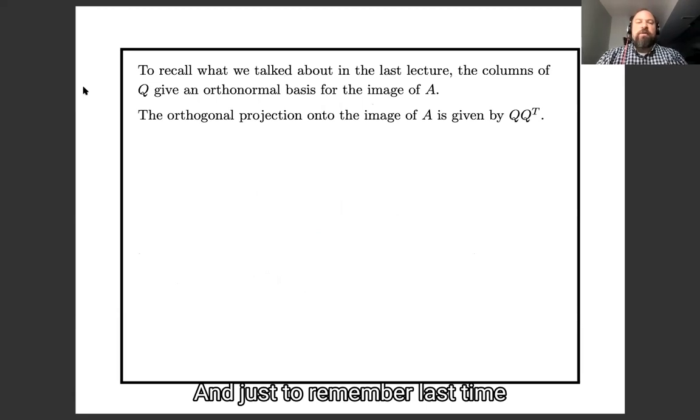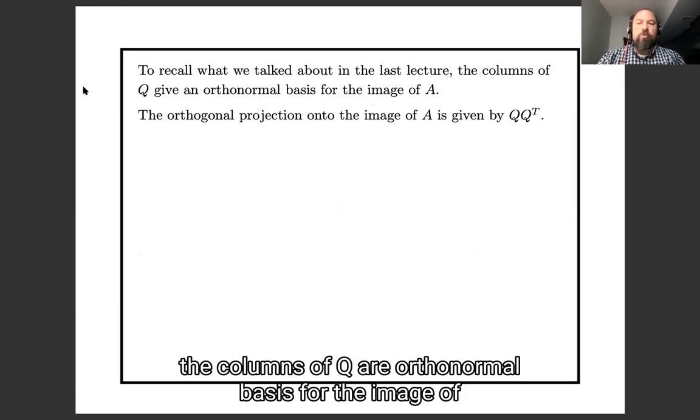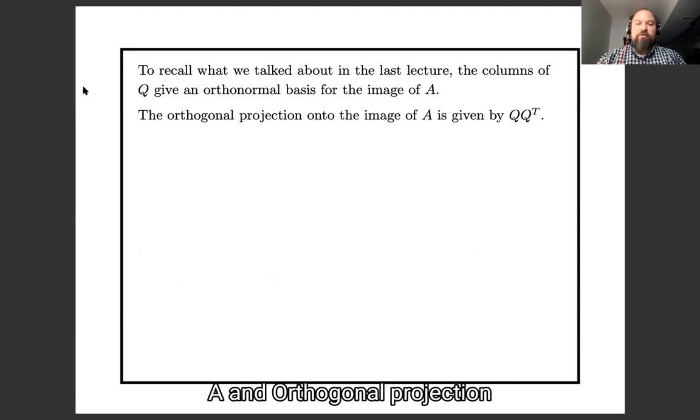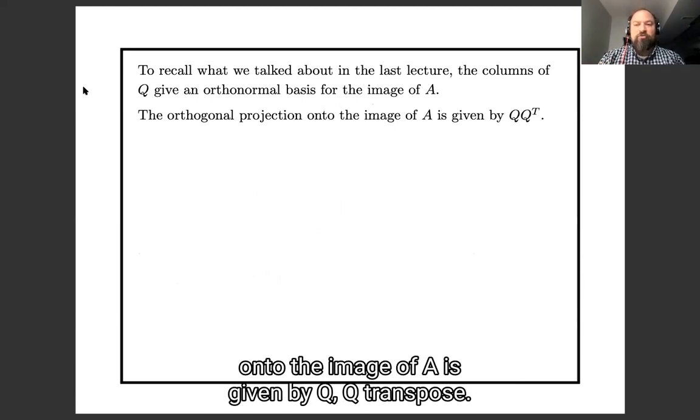And just remember last time, the columns of Q are an orthogonal basis for the image of A, and the orthogonal projection onto the image of A is given by Q Q transpose.